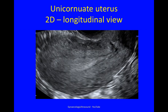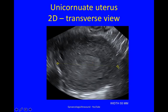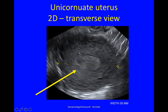A unicornuate uterus is really easy to miss on 2D longitudinal view — anterior wall, fundus, posterior wall, cervix, cervical canal and into the endometrial cavity — it looks entirely normal. In the transverse view, you may notice the width is a bit narrower than usual, but mainly the endometrial cavity tends to be fairly circular. It does not widen into the nice long stripe you normally see on a transverse plane.